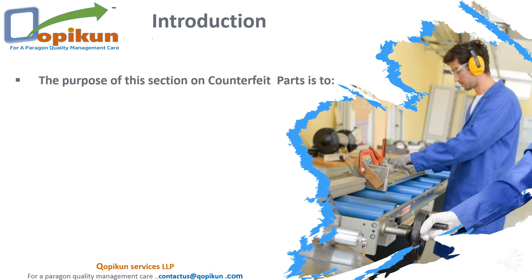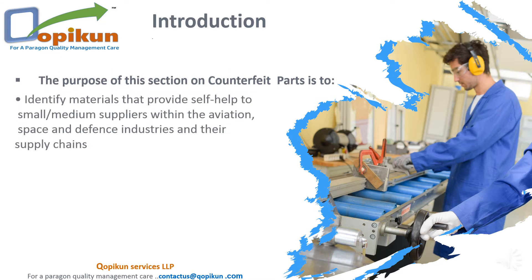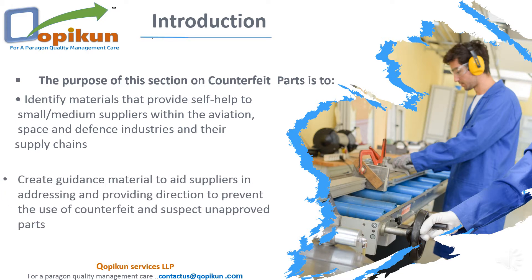Introduction: The purpose of the guidance in this section on counterfeit parts prevention is to: Point 1 — identify materials that provide self-help to small and medium suppliers within the aviation, space, and defense industries and their supply chains. Point 2 — create guidance material to aid suppliers in addressing and providing direction to prevent the use of counterfeit and suspect unapproved parts.